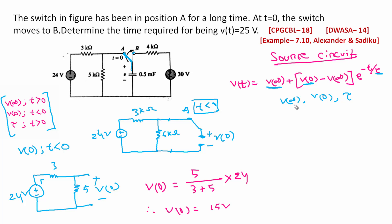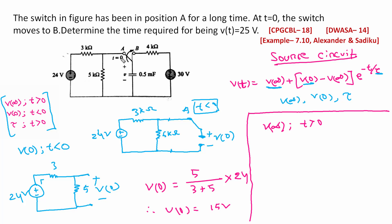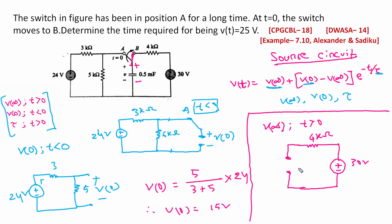V0 is now complete. V0 is calculated as 15V. Now for T greater than 0, we calculate V-infinity. The switch is now at position B with a 3V voltage source and 4 kΩ resistance. Since it is a DC supply, the capacitor is open circuit, so the open circuit voltage gives us V-infinity.